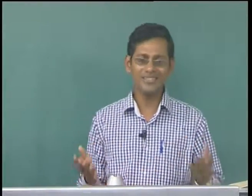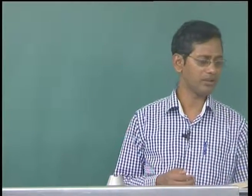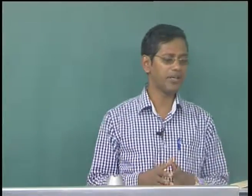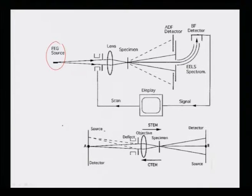The components in a scanning transmission electron microscope are more or less the same as in a conventional TEM — not much difference. The key addition is a scanning coil which makes the beam scan the sample in raster mode, just like in a scanning electron microscope. There are practically many advantages to using STEM.